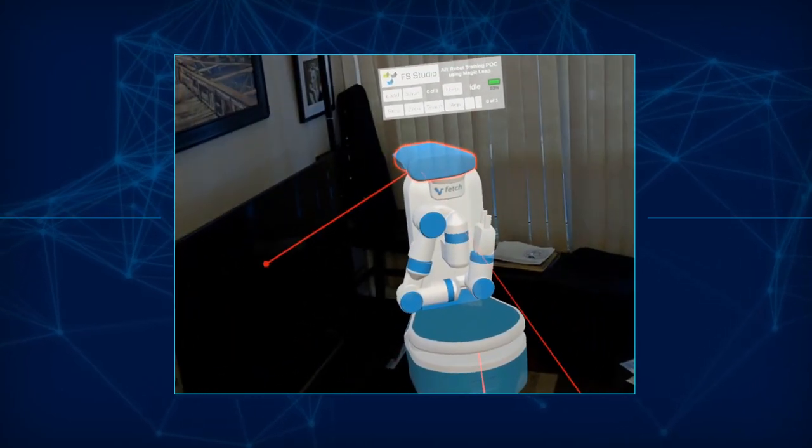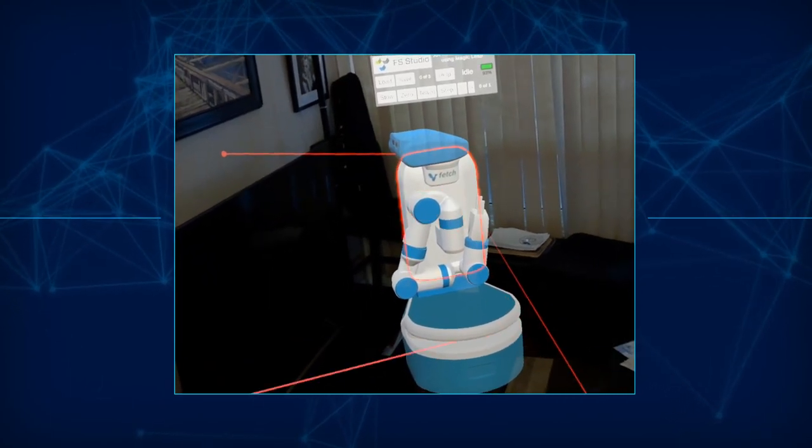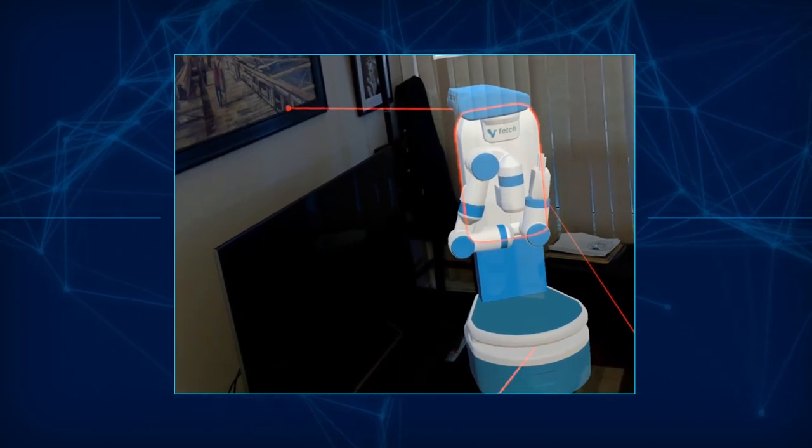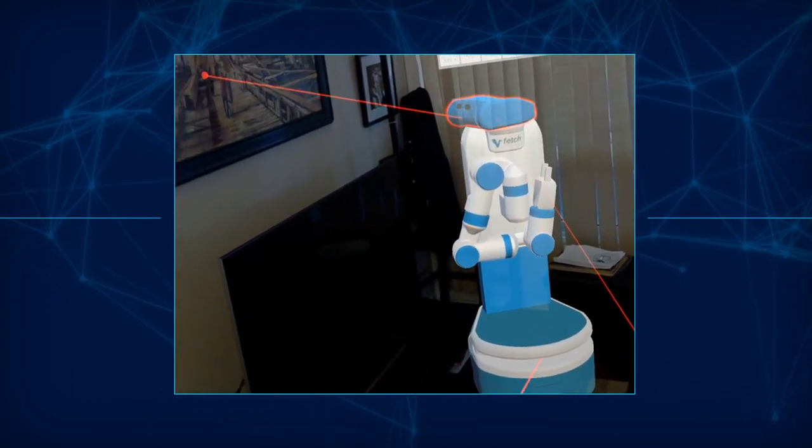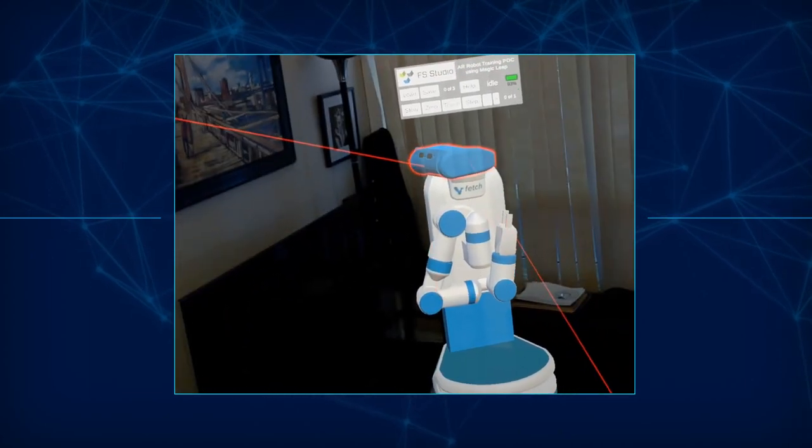One area where the Magic Leap can excel is in helping to train and operate robotic systems. Robots can move around, and they have parts that can also move around. They are inherently spatial devices.